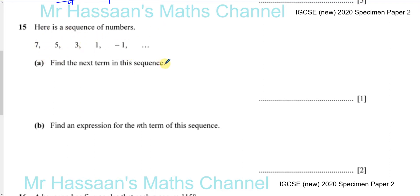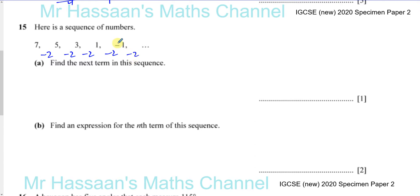Find the next term of the sequence. So what we do is we look at how the terms change, and it seems quite obvious here that every time you have to go down by 2, go down by 2, go down by 2. And if you go down by another 2, minus 1 minus 2 is minus 3. That's the next term in the sequence, simple as that.